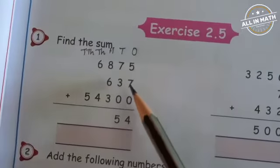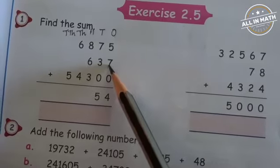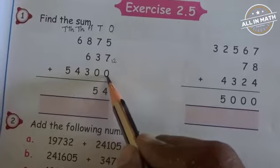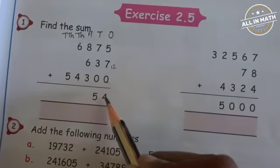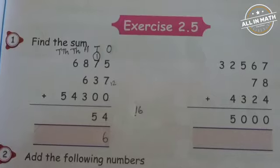First, add 5 and 7. What is 5 plus 7? Good, it is 12. And 12 plus 0 is 12. And 12 plus 4? Yes, it is 16. So, I am going to put 6 in the 1's place and take this 1 as a carry over in the 10's place.